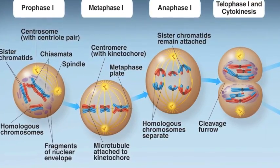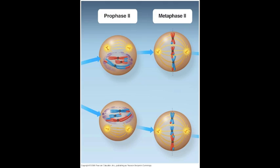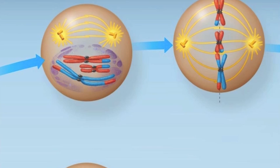Now enter meiosis 2, the second cellular division in the creation of new reproductive cells. Every event in meiosis 2 occurs in both cells simultaneously.